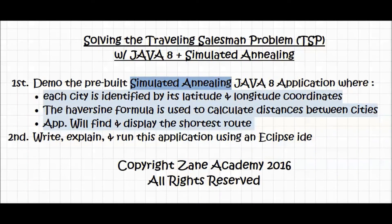This tutorial will cover solving the Traveling Salesman Problem with Java 8 and simulated annealing. I will start by doing a demo of the pre-built application, and then I will write, explain, and run this application using an Eclipse IDE. The application will find and display the shortest route, and the Haversine formula will be used to calculate distances between cities. Each city will be identified by its latitude and longitude coordinates.